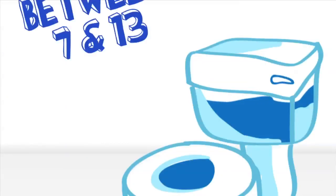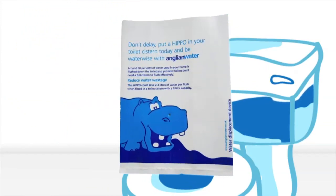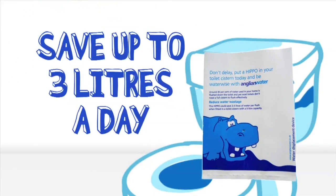For bigger cisterns that flush between 7 and 13 litres, we provide the Hippo. They're designed for much bigger cisterns, and could save you up to 3 litres of water per flush.